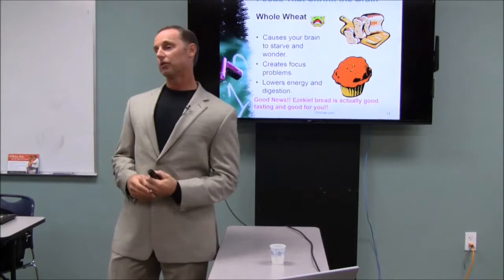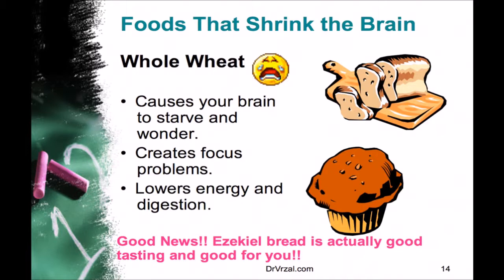The problem with whole wheat in America is it's virtually all genetically modified. When they genetically modify it, they've changed the way that the grain grows. Corn is the same way, unfortunately. They've trained it to grow pesticides into the wheat germ so that it protects it from bugs.